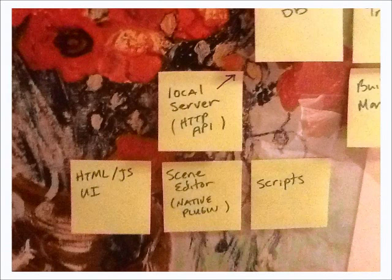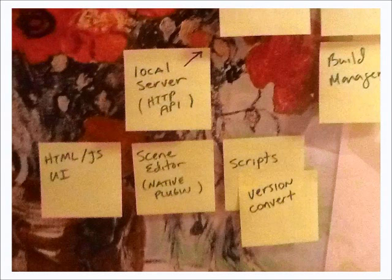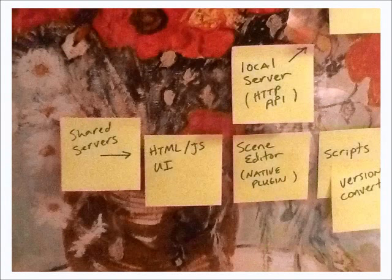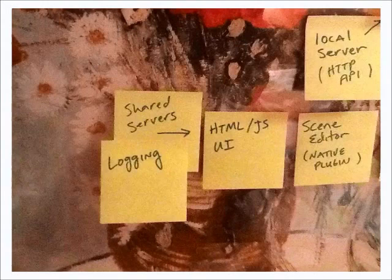We also have scripts that manage version conversion automatically. If a new version of an asset description is created, we have a version update script we add, so whenever somebody opens a file that's an older version it automatically updates on read, making the newer version available to the database and the whole UI.